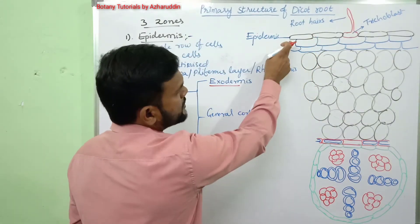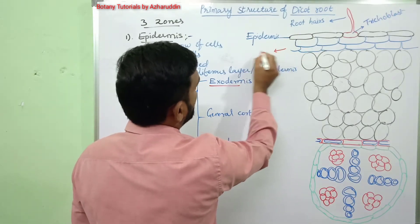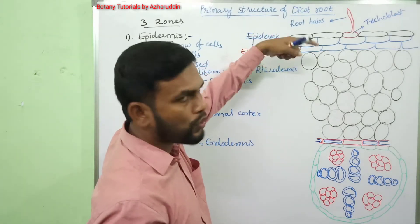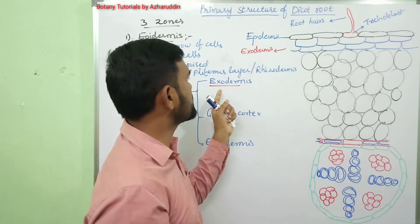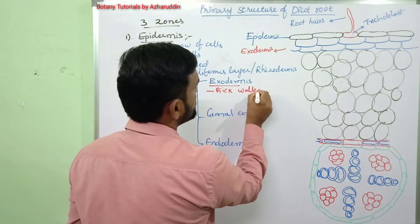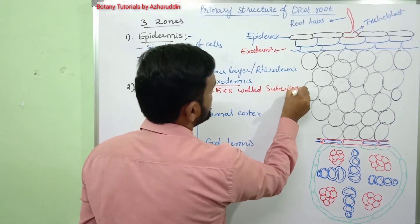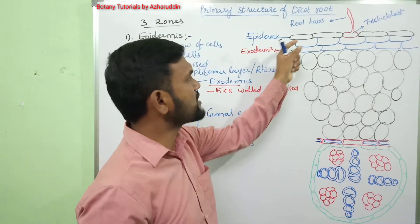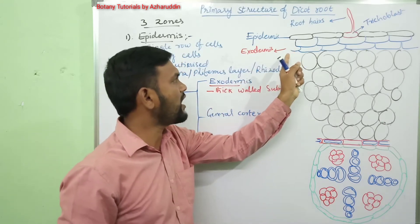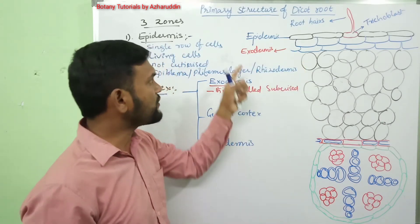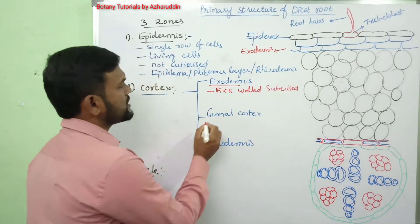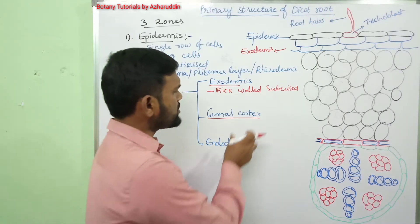Exodermis is present below the epidermis. It is composed of two to three rows of cells that are closely arranged. They contain thick-walled suberized cells. This exodermis gives protection to the inner tissues when the epidermis is damaged or removed, and it also prevents the loss of water from the cortex to the outer environment.